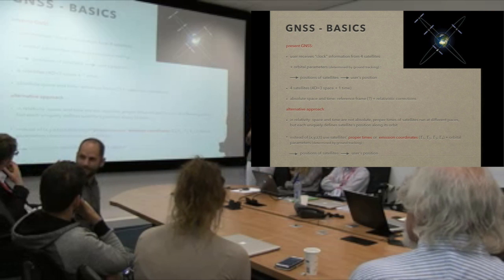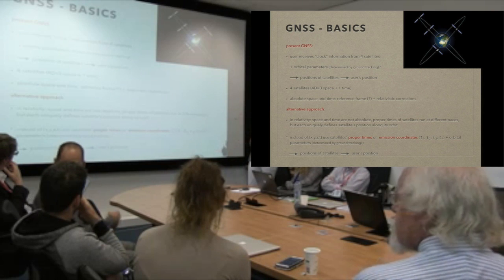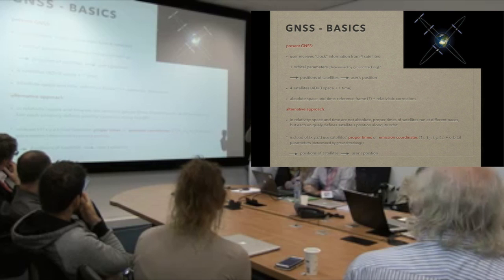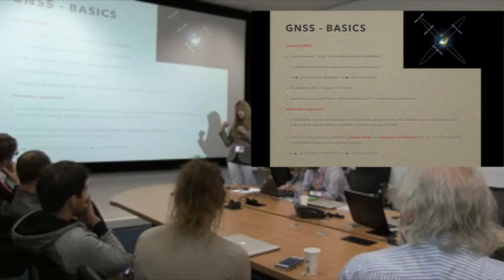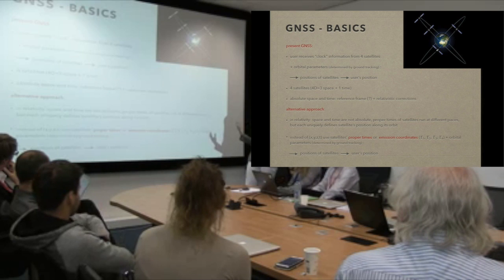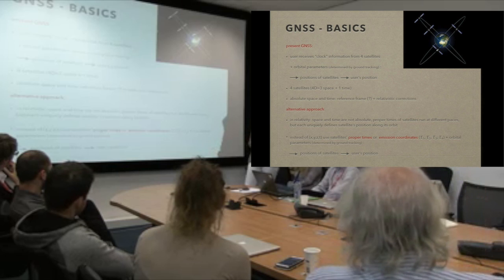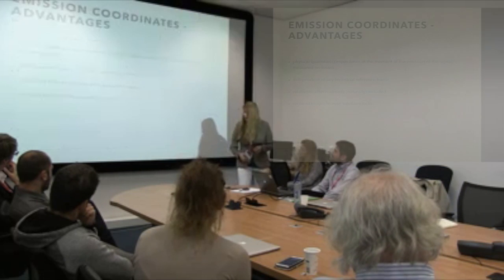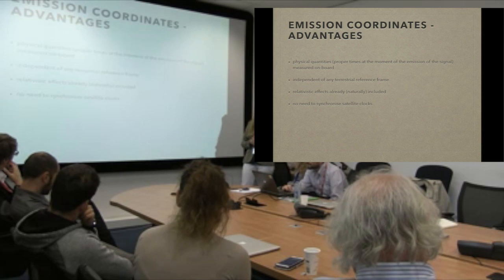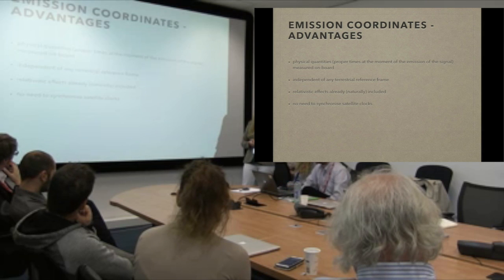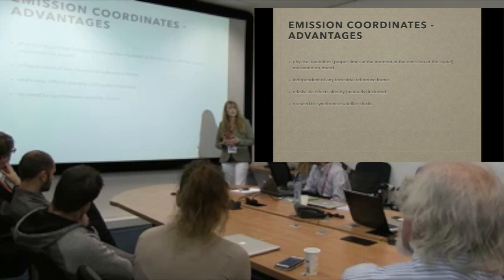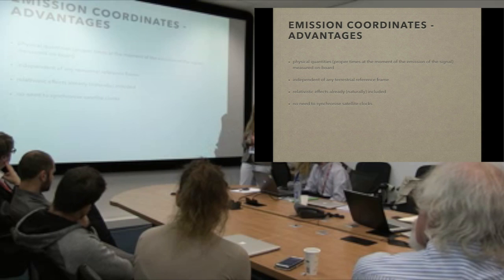The proper times of these satellites at the time of emission of the signal — these times, plus the orbital parameters we know from ground tracking, tell us where the satellite is along its orbit, and from this we can deduce the user's position. The advantages of using these emission coordinates and proper times are that these are physical quantities measurable on board, and they are independent of any terrestrial reference frames.